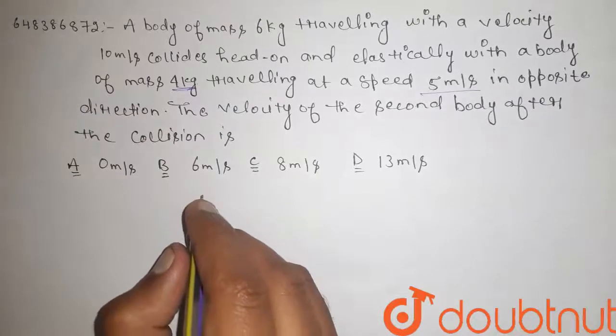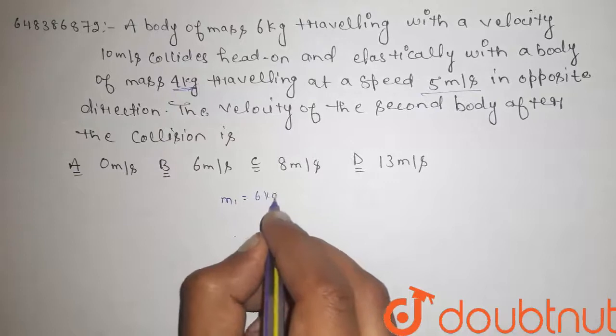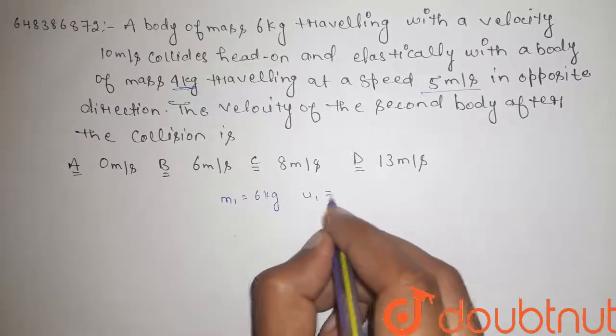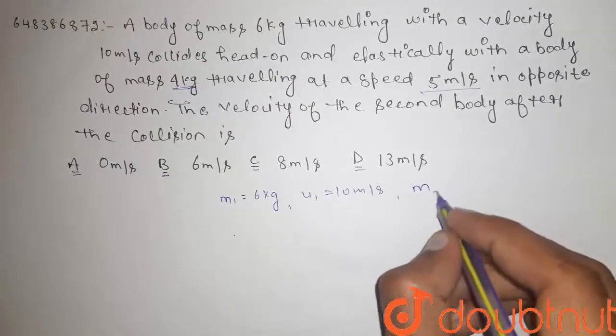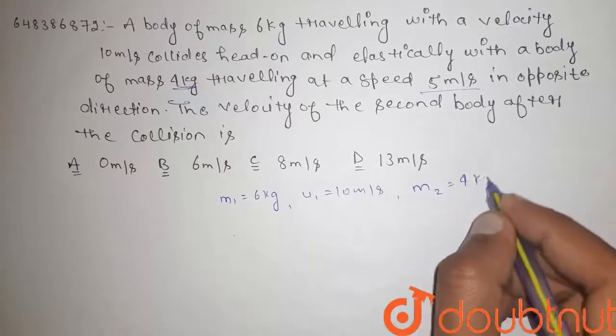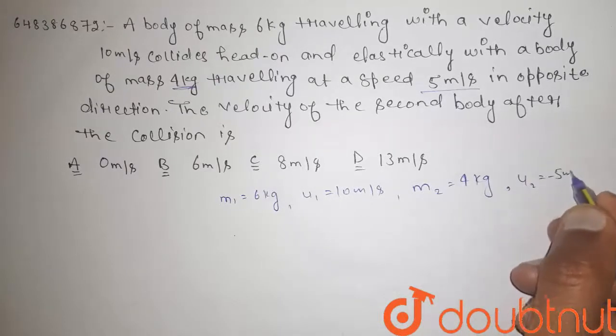So guys, this is the question of simple linear momentum conservation. m1 is given as 6 kg, u1 is 10 meter per second, m2 is 4 kg, and u2 is minus 5 meter per second.